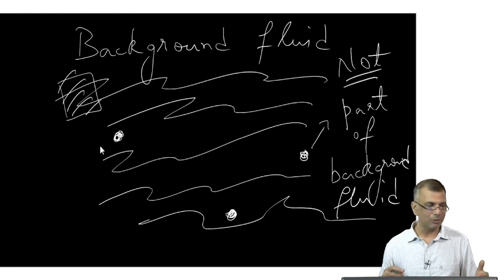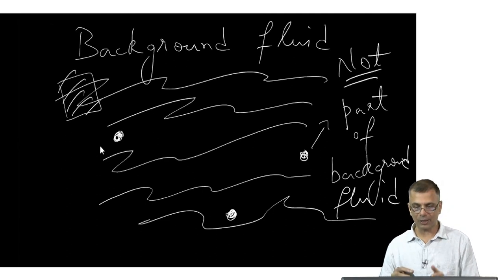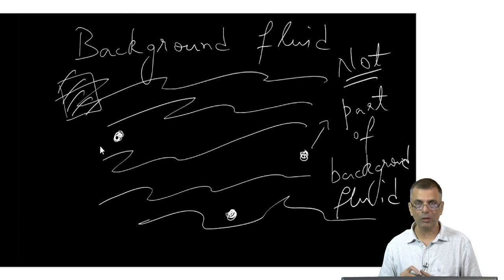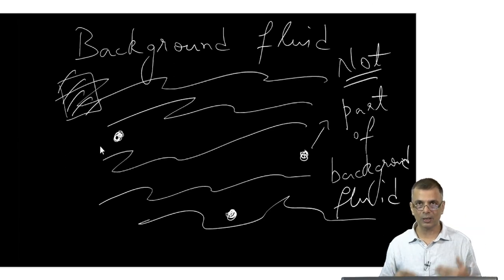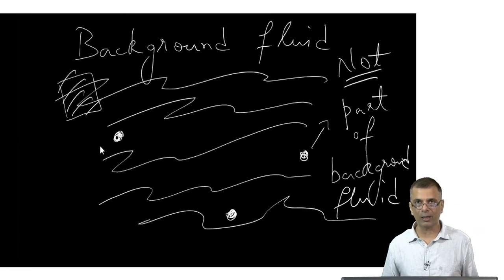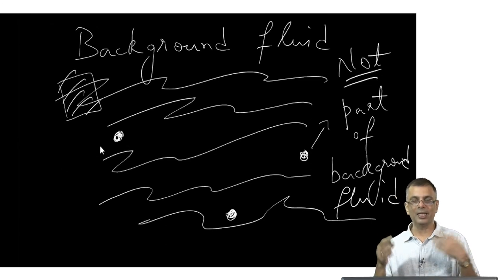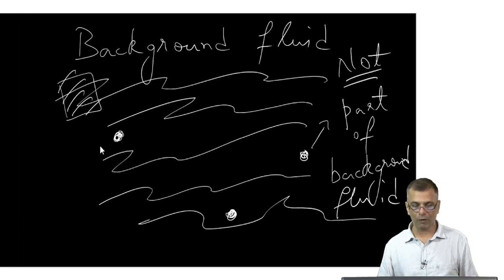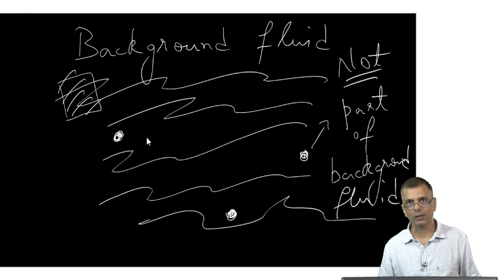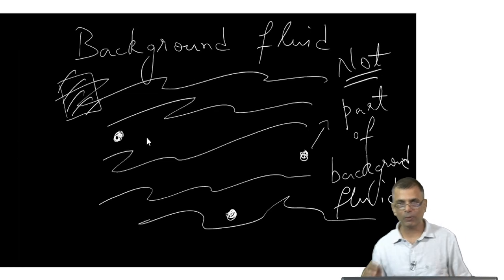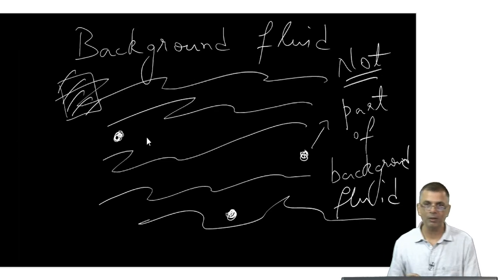I want to again emphasize that these accelerated particles are not part of the background fluid. The background fluid comprises very low energy particles — think of them as colored blue — whereas the accelerated particles are very high energy, few, and far apart. They are test particles sampling properties of the background fluid. When we meet next, we will discuss how shocks in the background fluid can serve as agents for accelerating these particles. We'll stop here for the time being.